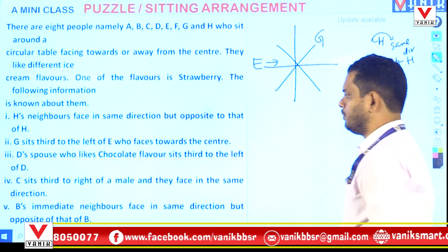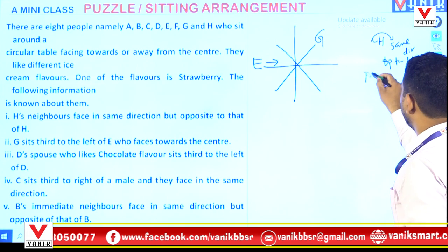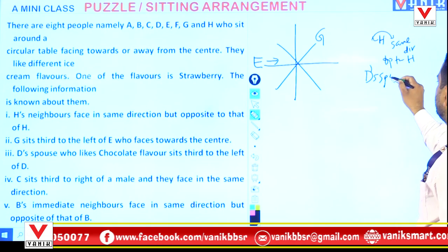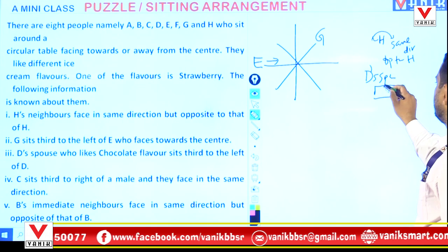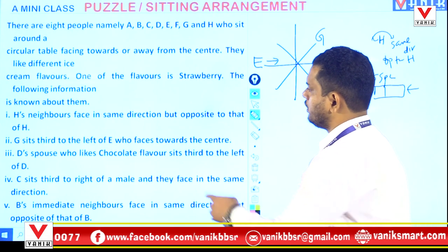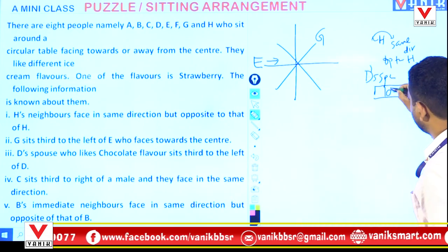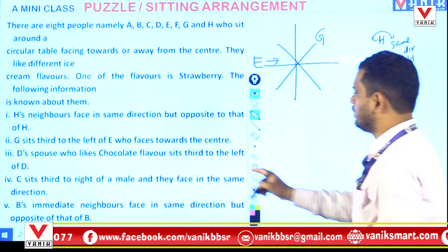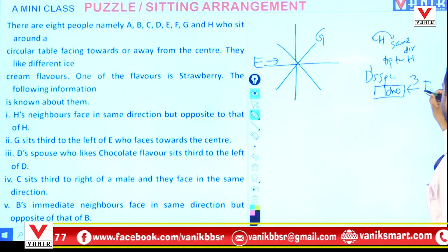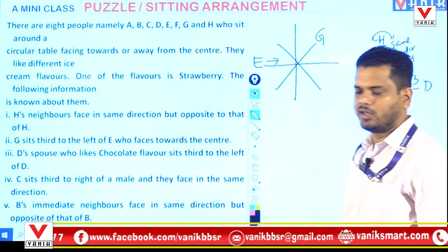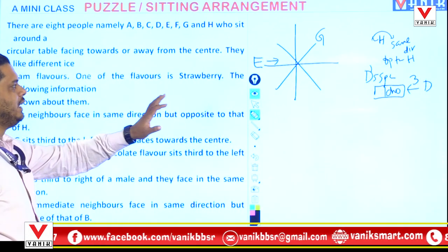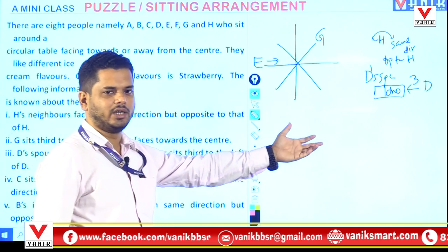Condition 3: D's spouse — note the gender of D is not even clarified — who likes chocolate flavor, sits third to the left of D. So this person is third to the left of D. I have mentioned this data here. The reason we cannot put D directly in the arrangement is that there is no direct relation — D's position depends on the spouse's placement.